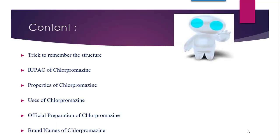We are going to see the following things. First, we are going to see the structure of Chlorpromazine and its mnemonic — how to remember the structure from the name. Then we'll cover the IUPAC name, properties, uses, official preparation, and brand names of Chlorpromazine. From the exam point of view, questions are asked about properties, structure, and uses. It is a really important drug from the chapter on Tranquilizers.